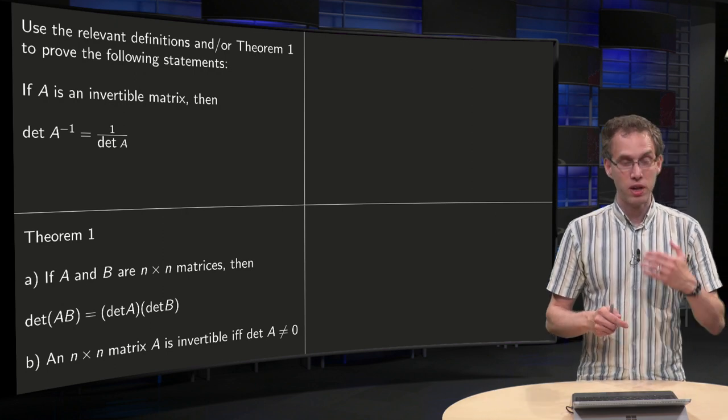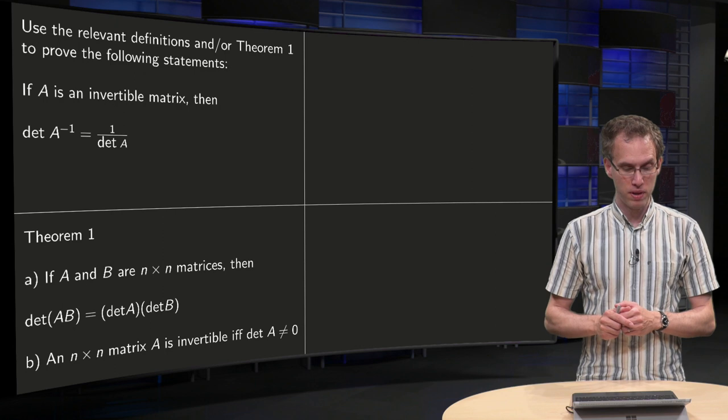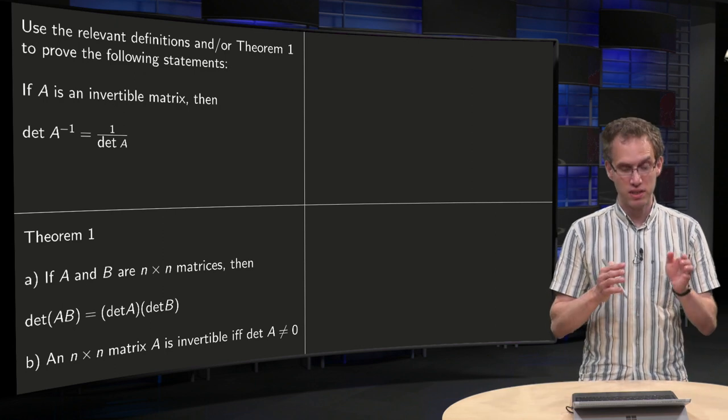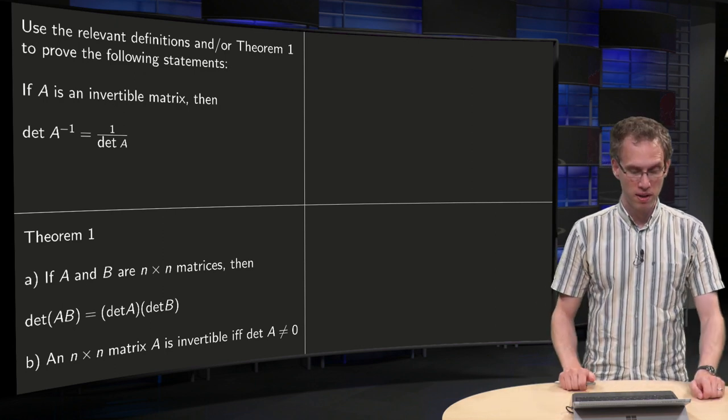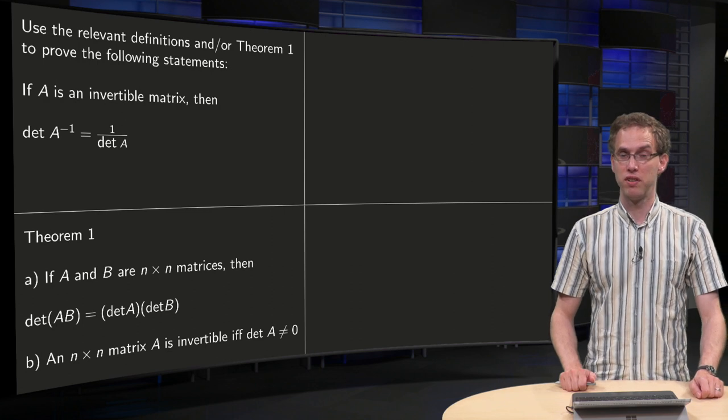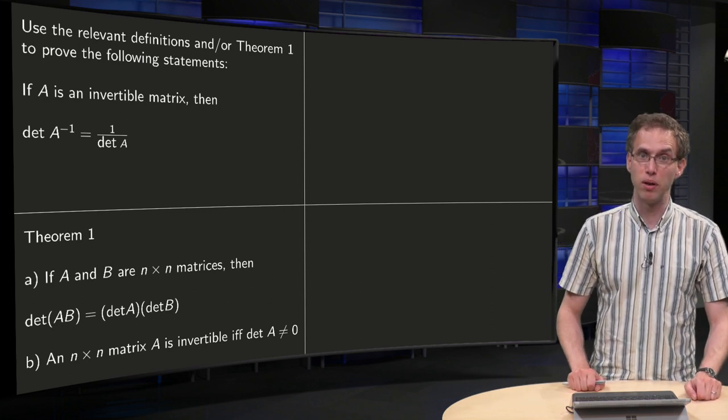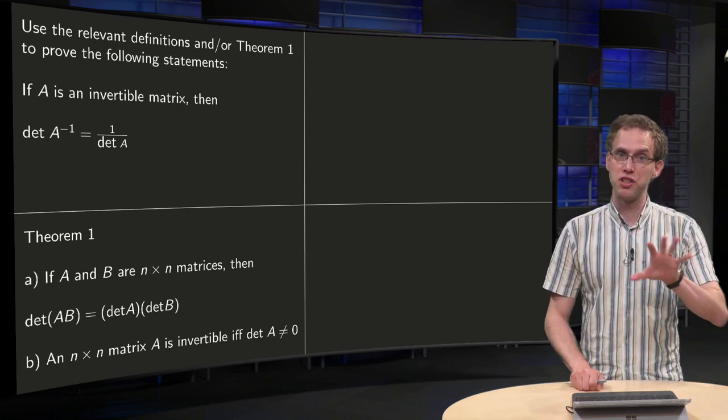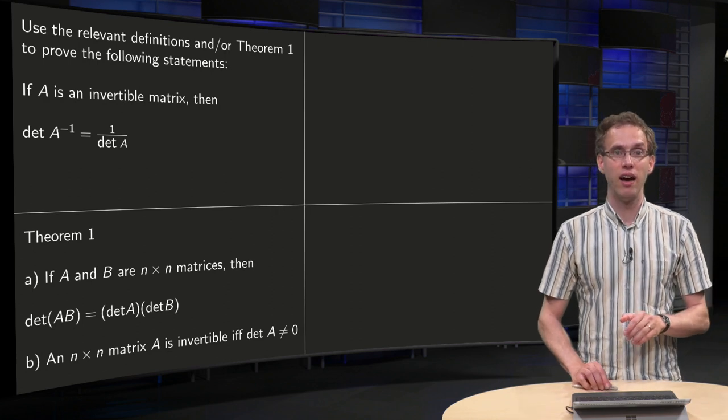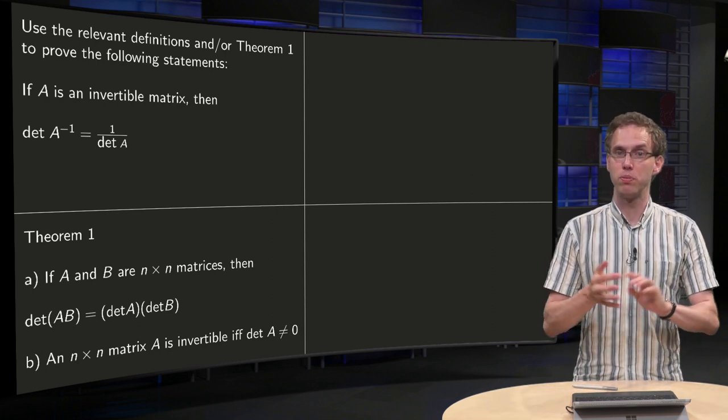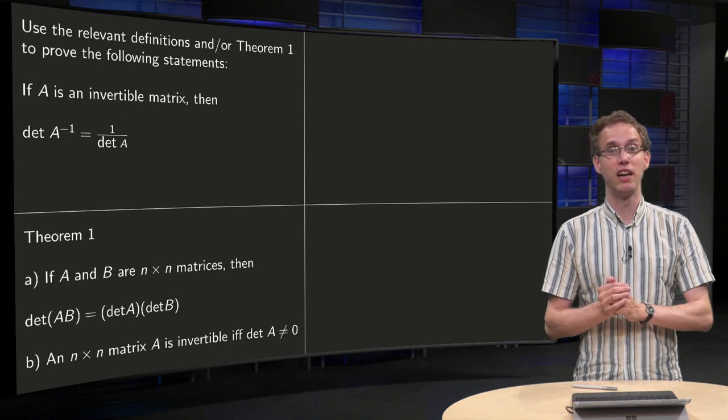Theorem 1 says if A and B are n × n matrices, then det(AB) equals det(A) times det(B), and an n × n matrix A is invertible if and only if det(A) is non-zero. It is not said that we need Theorem 1 to prove the statement, but we can use it if we like.